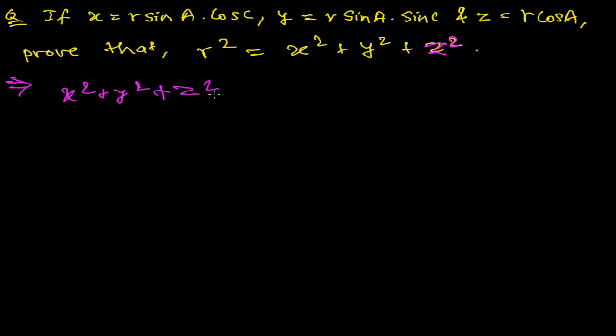Right? And let me put the value of X square, Y square and Z square. What is the value of X square? That is R square sine square A times cos square C. So it will be R square times sine square A times cos square C, and again plus Y square. So here Y square will be R square times sine square A times sine square C and again plus Z square. That is R square, right? R square times cos square A.